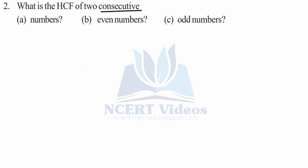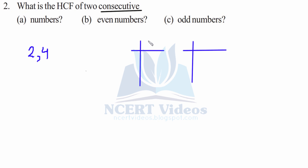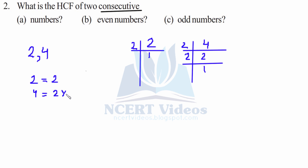Part b: consecutive even numbers. Take 2 and 4. Prime factorization: 2 is just 2×1, and 4 is 2×2. When we write the prime factors and pair them, only 2 is common. So for consecutive even numbers the HCF will always be 2. This will be true for all consecutive even numbers.